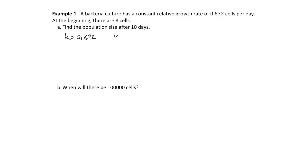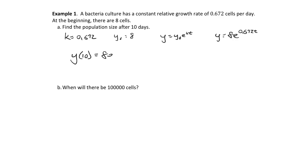At the beginning we know there are 8 cells, so y(0) equals 8, which means our equation is y equals 8 times e to the 0.672t. We want to find the population after 10 days, so we evaluate at t=10: y equals 8e to the 0.672 times 10, which equals 6,631 after rounding, because we don't want to talk about partial cells.